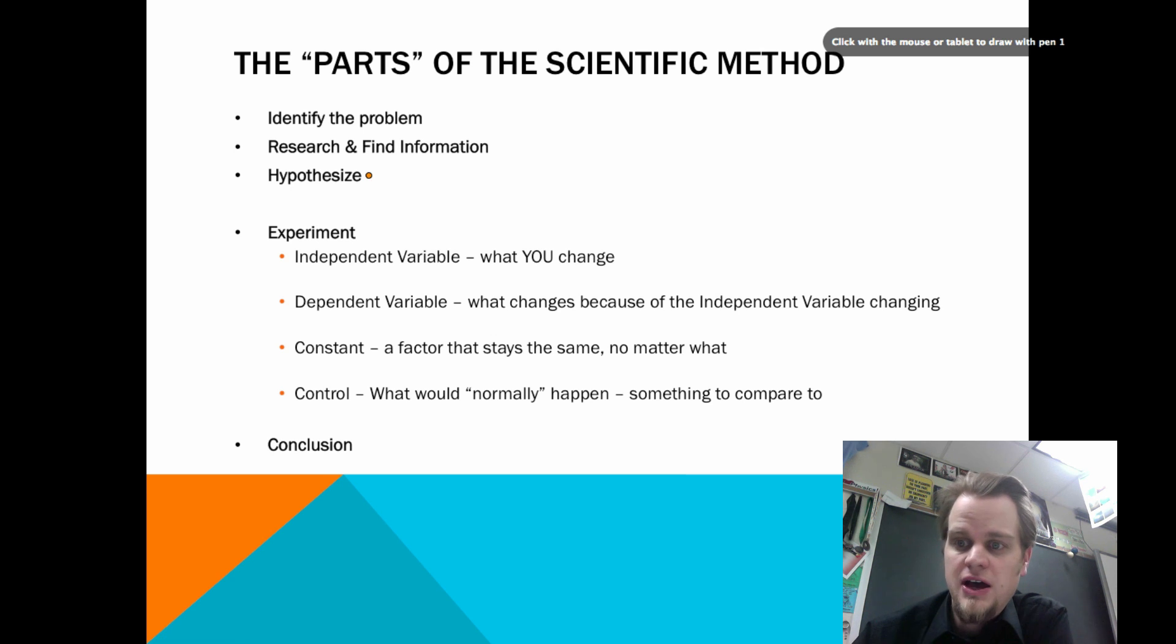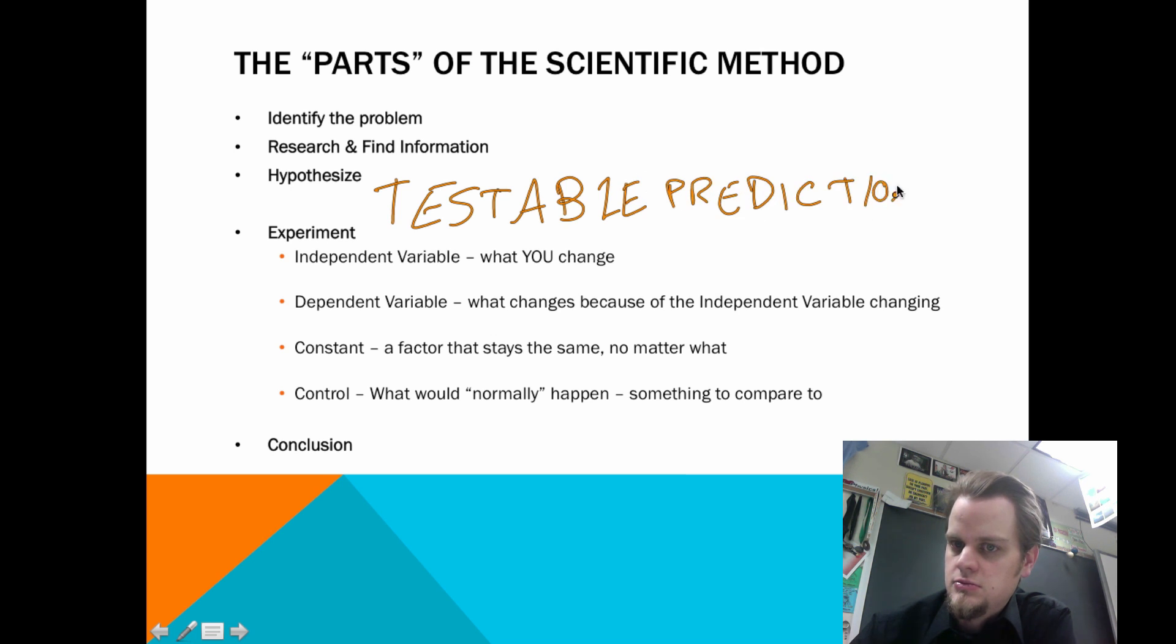Then they go ahead and they make a hypothesis. Now you might be tempted to think of a hypothesis as an educated guess. Don't use that anymore. That is old school, that is middle school, that is elementary school. We have a more nuanced version of that. A hypothesis, and this is why I'm writing it, a hypothesis is a testable prediction. A testable prediction. It has to be testable. You can't test certain things. It's got to be something that you can actually test. And it's got to be a prediction. You have to be able to see if it's right or if it's wrong at the end.